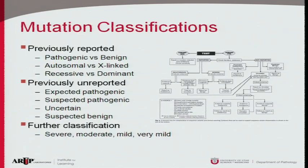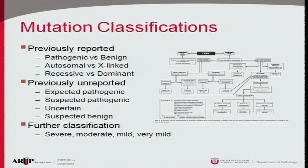We need to realize that autosomal recessive versus X-linked variants are approached differently, as are dominant versus recessive diseases. For a dominant disease you look for one causative mutation; for a recessive you have to find two mutations and show they're on different chromosomes. If a variant is previously unreported but is a stop codon or nonsense mutation in the middle of the gene, we can often report it as pathogenic.